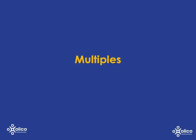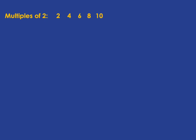Let's have a look at multiples. If we talk about the multiples of two, what we mean are all the numbers you can get by multiplying two by a whole number — so like two times one, two times two, two times three, two times four, and so on. Any number you get by multiplying two by a positive whole number is a multiple of two.